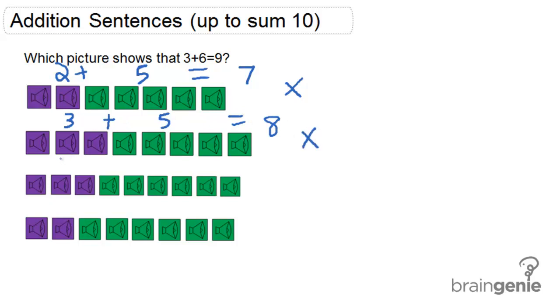In the next case, 3 purple speakers plus 1, 2, 3, 4, 5, 6 green speakers does equal 9 total speakers. So this is the correct answer.